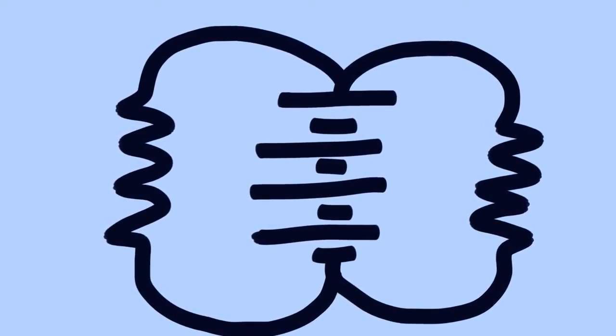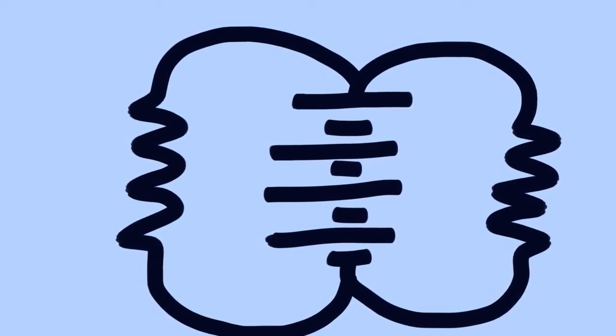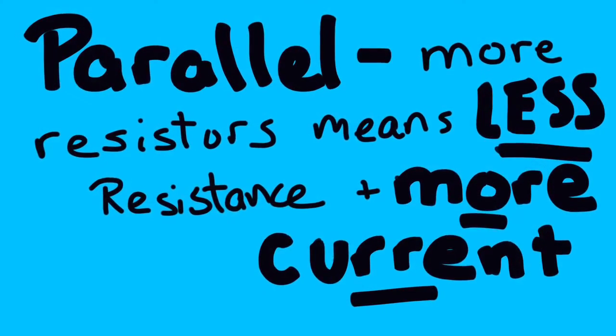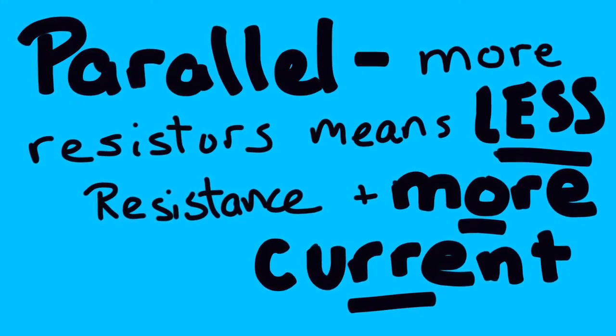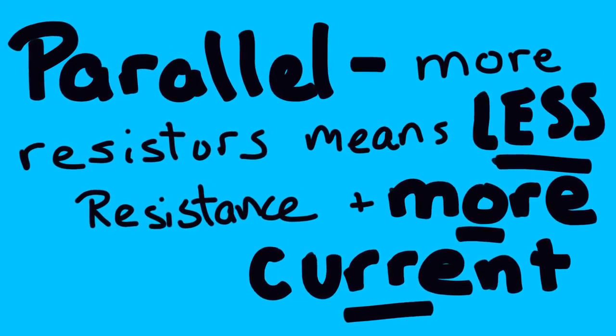So that's an important relationship in your house because your house is wired in parallel. As you add more resistors, turn on more things in the same parallel circuit, the current goes up and sometimes has to be cut off.